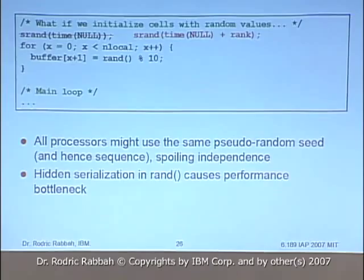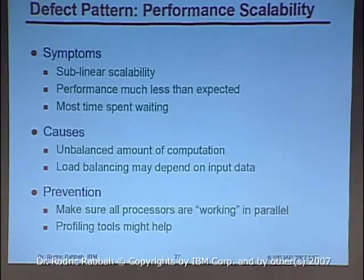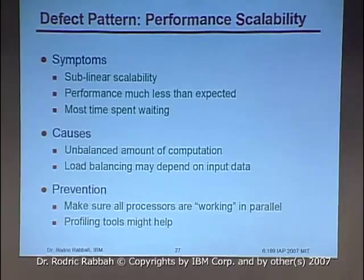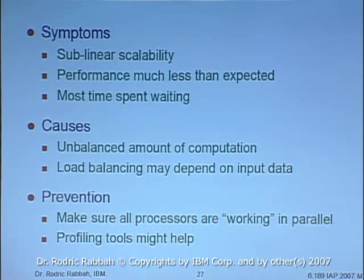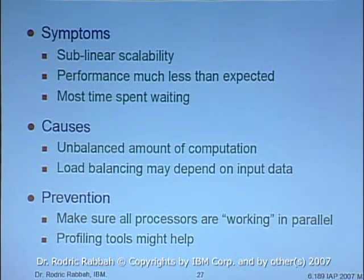The last defect is performance scalability. You've parallelized your code, handled I/O issues, but still aren't getting the performance you want. Remember Amdahl's Law — you want a linear relationship between number of processors and speedup. Sub-linear speedup often comes from unbalanced computation: dynamic vs. static load balancing, wrong work estimation, some processors idling while others do too much. The prevention is to look at the work being done across processors and use profiling tools — this will be the in-depth focus of the next lecture.